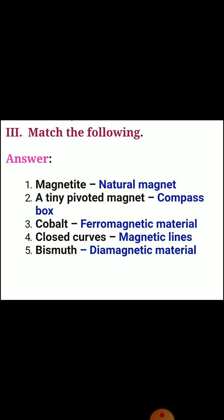Section three: match the following. First: magnet — answer: natural magnet. Second: tiny pivoted magnet — answer: compass box. Third: cobalt — answer: ferromagnetic material. Fourth: closed curves — answer: magnetic lines. Fifth: bismuth — answer: diamagnetic material.